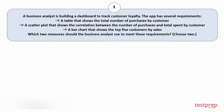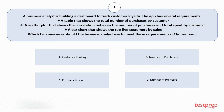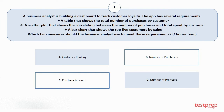Question number 3. A business analyst is building a dashboard to track customer loyalty. The app has several requirements: 1. A table that shows the total number of purchases by customer. 2. A scatter plot that shows the correlation between the number of purchases and total spent by customer. 3. A bar chart that shows the top 5 customers by sales. Which two measures should the business analyst use to meet these requirements? Choose two. The correct answers are option B and C.